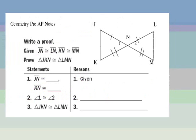Let's do a proof. I am given that JN is congruent to LN, and that KN is congruent to MN — that's all I'm given. However, when you see something like this that looks like a bow tie, you know these two angles are congruent to each other by vertical angles. You are always allowed to draw in vertical angles that are congruent, which means what we have going on here is the side-angle-side congruence postulate.